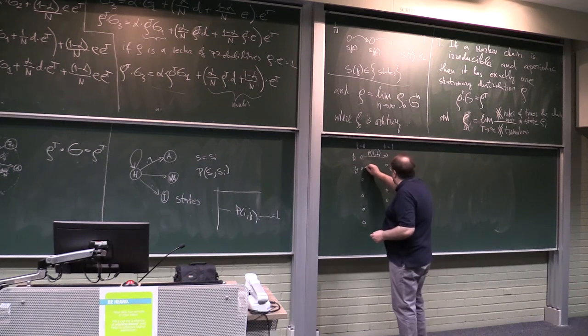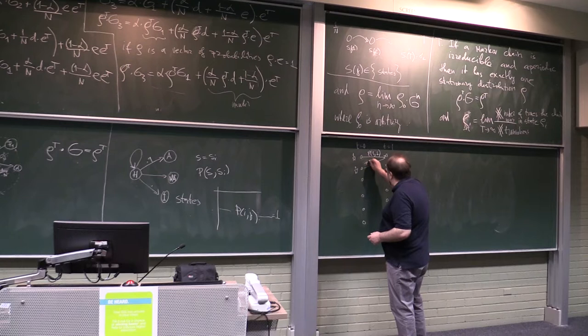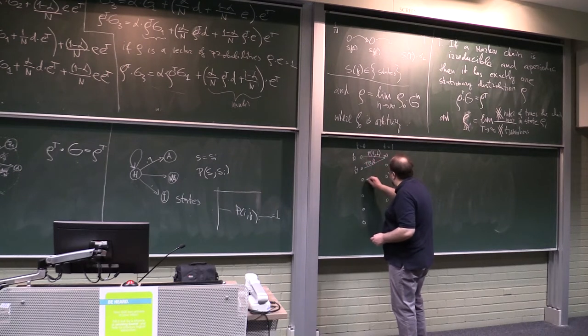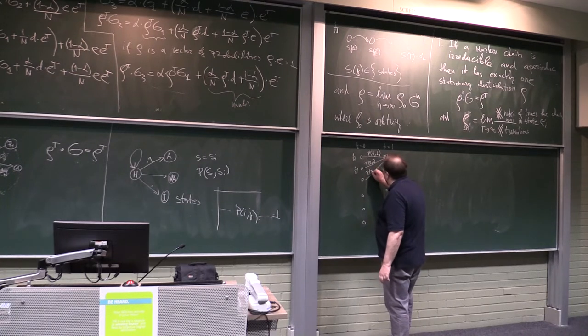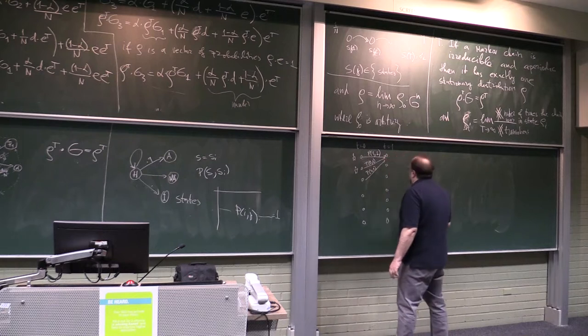Plus probability to be in this state times probability of transition from 2 to 1, plus probability to be in this state times probability of transition from 3 to 1, and so forth.